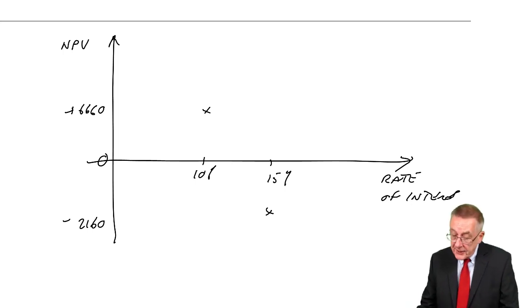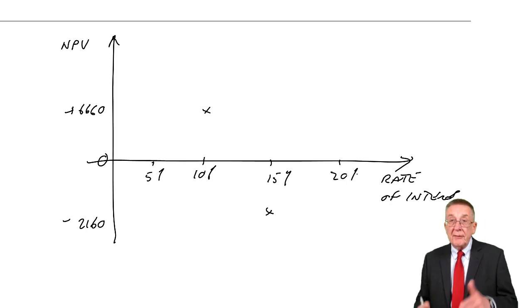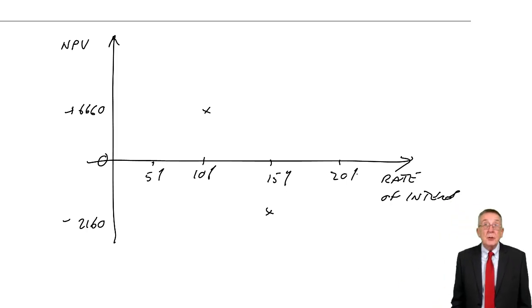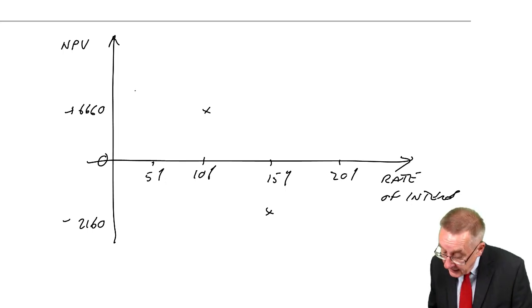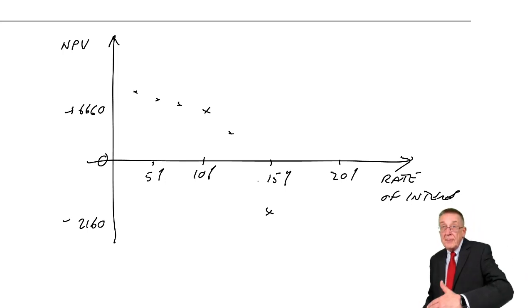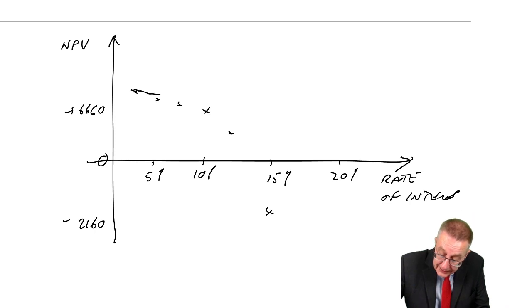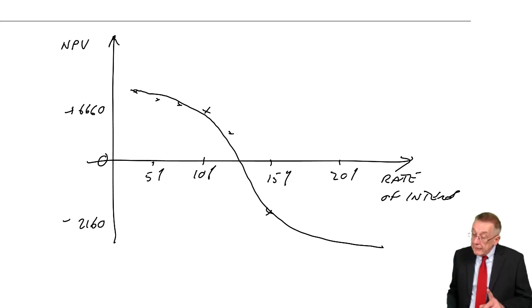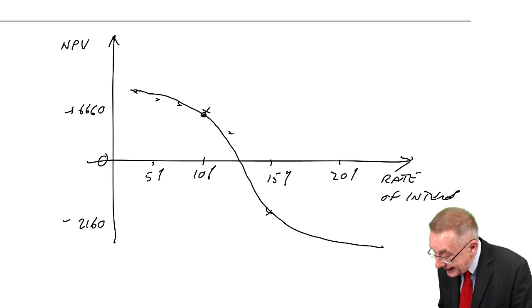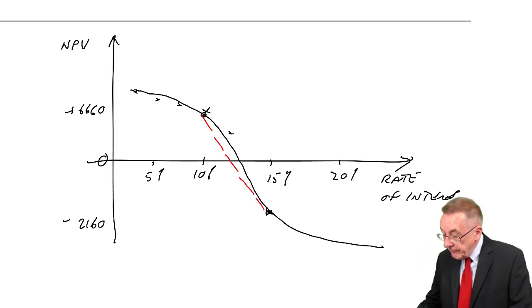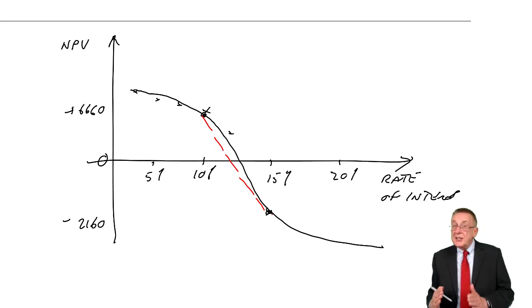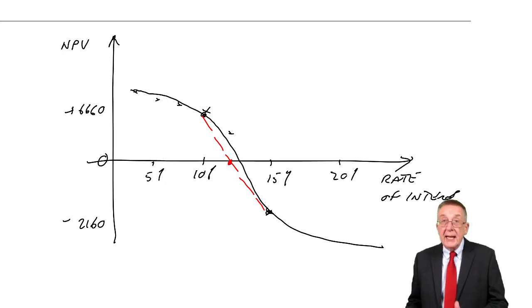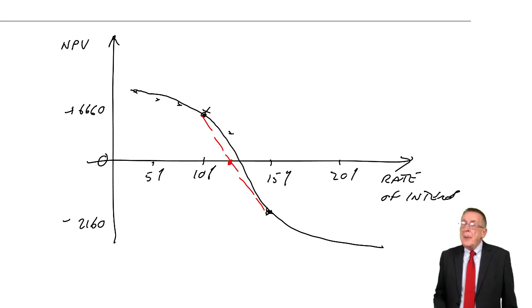Well, if you did lots more guesses, if you did 5%, 15%, 20% and so on, have a go if you don't believe what's coming. Have a go at home. But if you did, you would find that with higher rate of interest, the NPV falls, but it's actually a curve. And what we've done by just taking two guesses and working between them, we've effectively assumed it's linear.